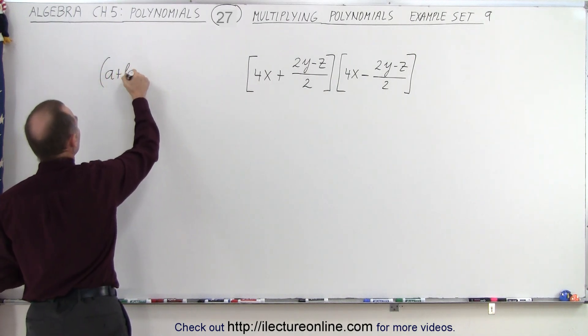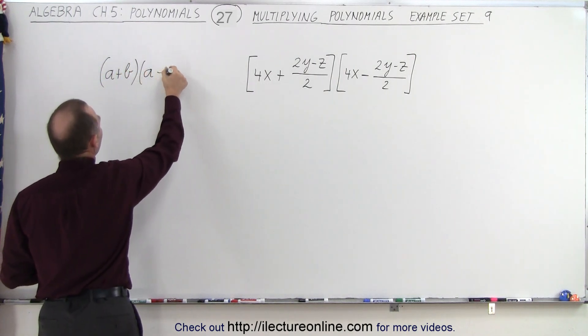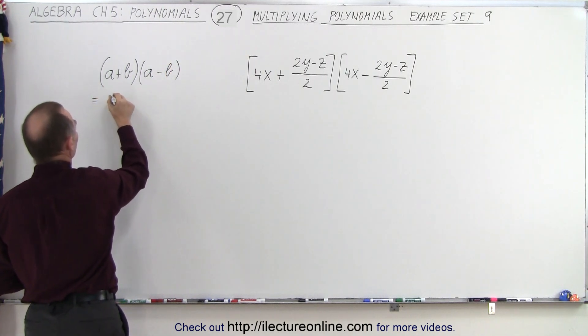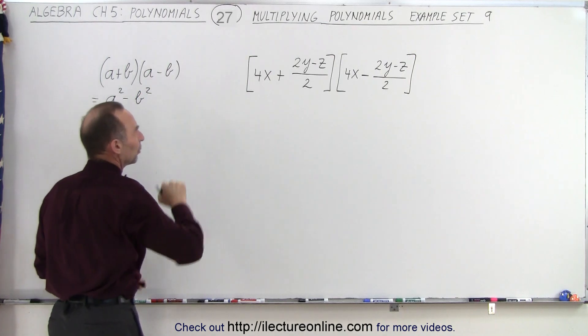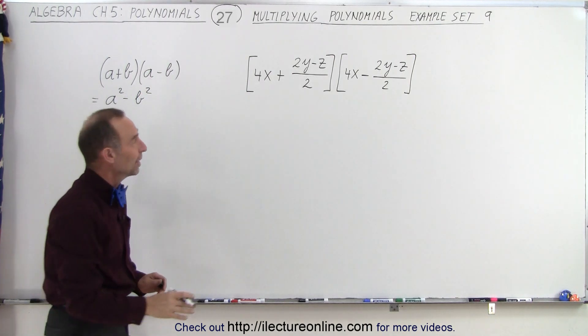A plus B times A minus B. And so the result of this would be the first term squared minus the second term squared. So what do we do over here? The exact same thing.